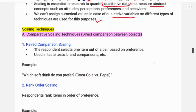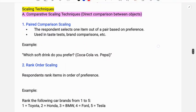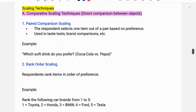The first type is comparative scaling technique, which involves direct comparison between objects. When we compare two objects, we can use the comparative scaling technique.